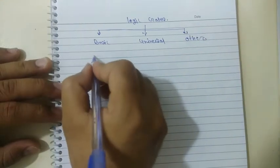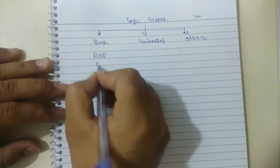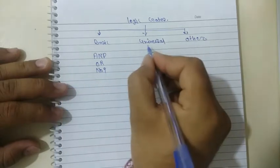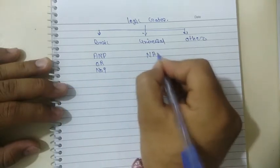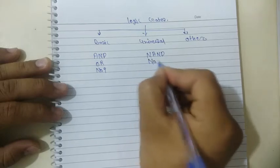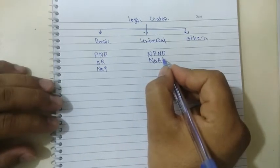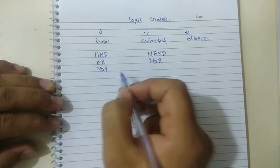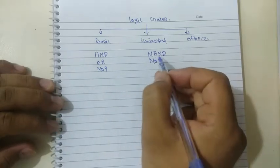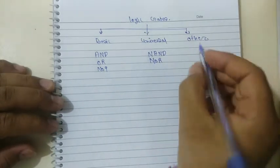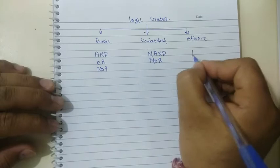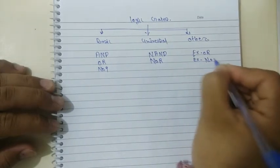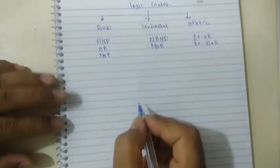The basic logic gates are the AND, OR, and NOT. Universal logic gates are the NAND and NOR. These are known as universal logic gates because other logic gates can be obtained by connecting them in particular configurations. XOR and XNOR gates are known as the other type of logic gates.